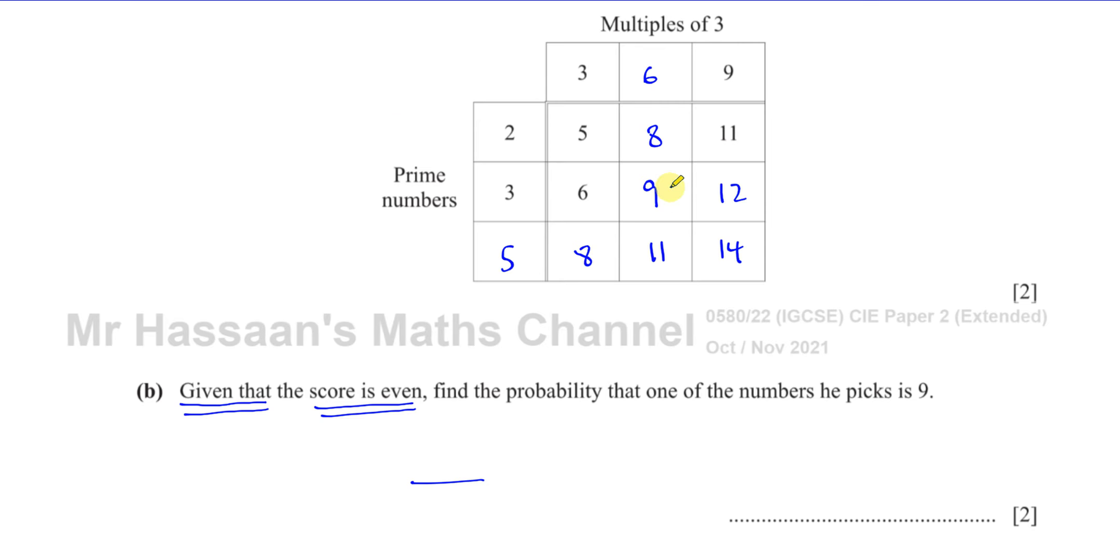The score is when you add the two numbers together. The scores that are even are 8, 6, 12, 8, and 14. Everything else is odd. That is our sample space. When we find the probability, we divide by the number of spaces here, which is 5.